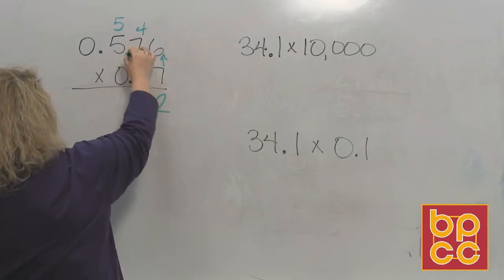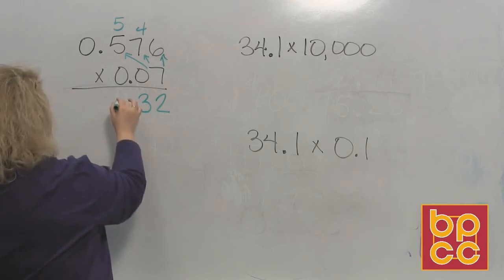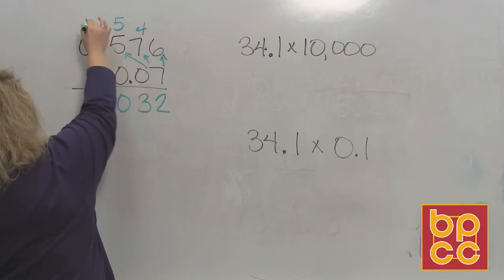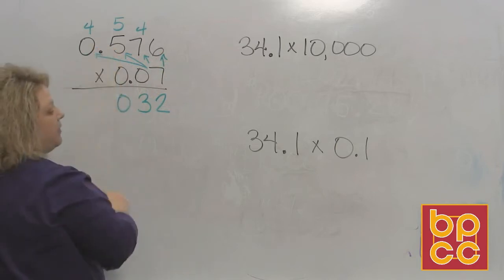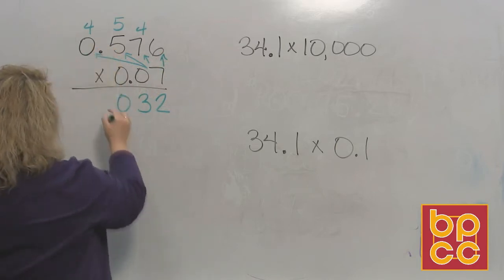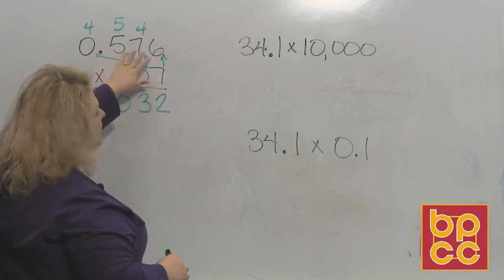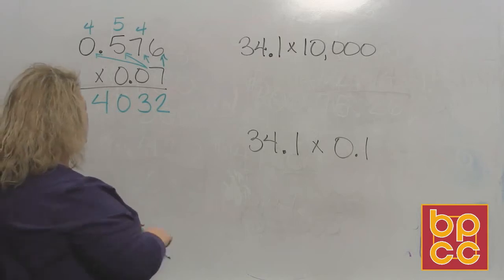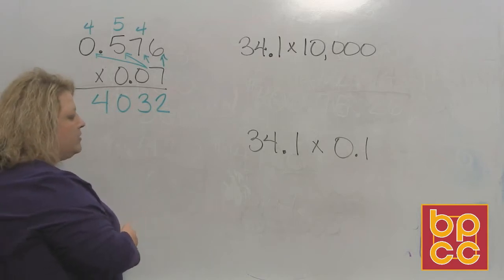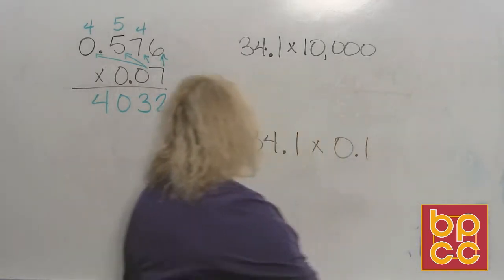So put the 3, carry the 5. Then 7 times 5 makes 35. 35 plus 5 makes 40. Put the 0, carry the 4. And then 7 times 0 is 0, but 0 plus 4 makes 4. So once you've done that number times everything that's at the top of it, now you're going to worry about how many decimal places do I need to use.